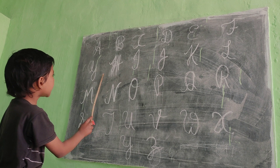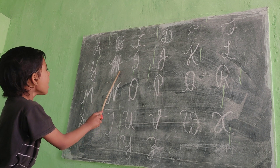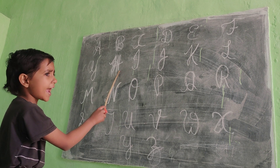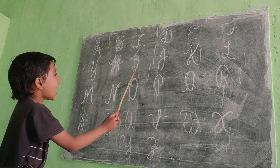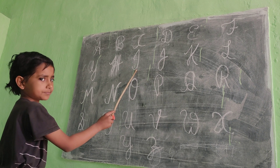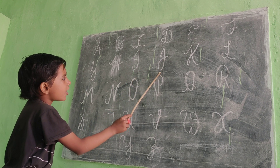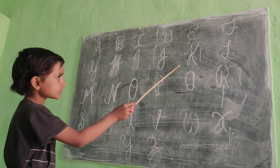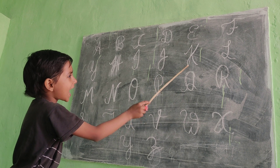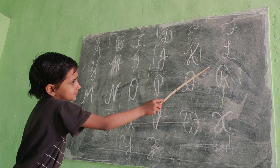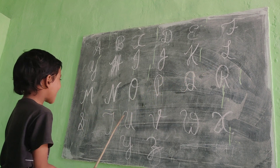G for grass, S for hand, I for ice cream, J for dog, K for kite, L for lion.